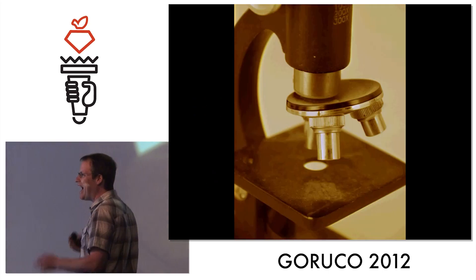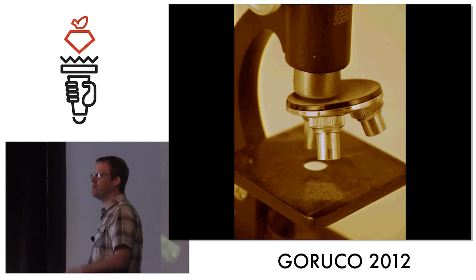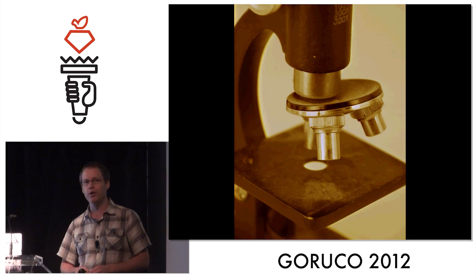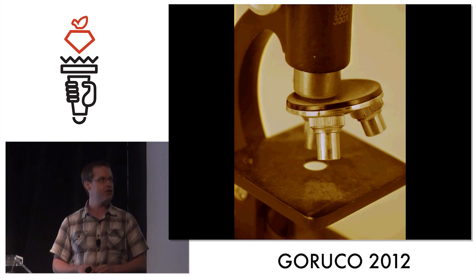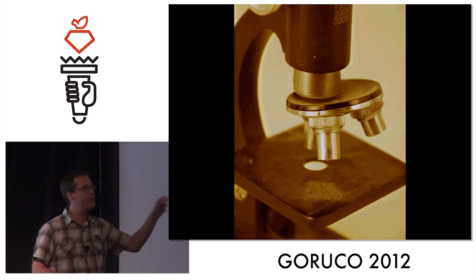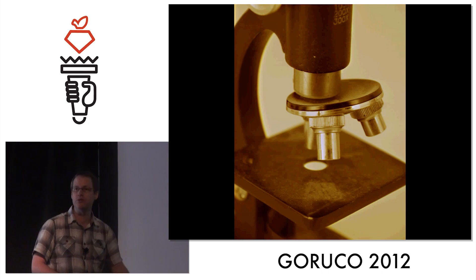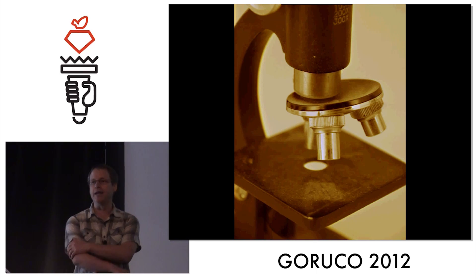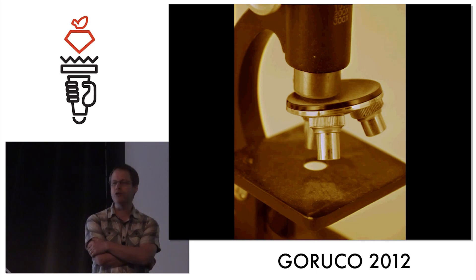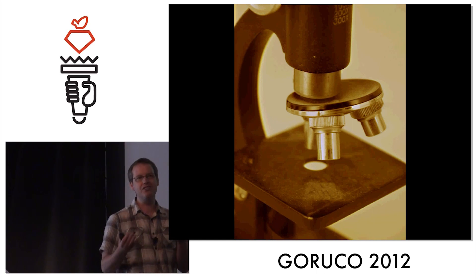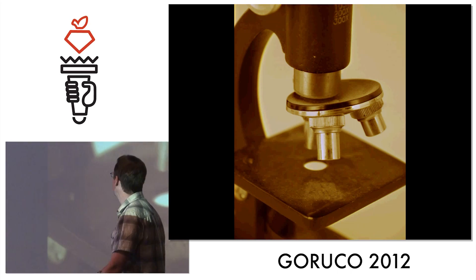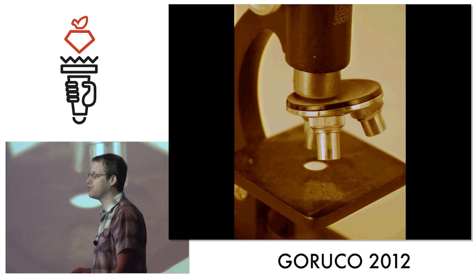Today I want to talk about how hashes are implemented internally — what goes on inside of Ruby when you use a hash. I want to put the hash object under a microscope, so to speak, and take a close look at it. And like with a real microscope, the closer you look at something, you start to see things you never even knew were there. There's some really cool stuff going on with hashes.